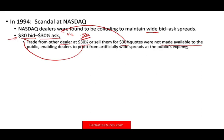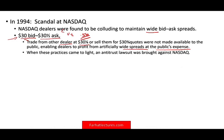As a result, the public was paying a higher price for buying stocks because the spread was wide. A wide spread means more profit in the pocket of the NASDAQ dealer. When these practices came to light, the government intervened and an antitrust lawsuit was brought against NASDAQ.